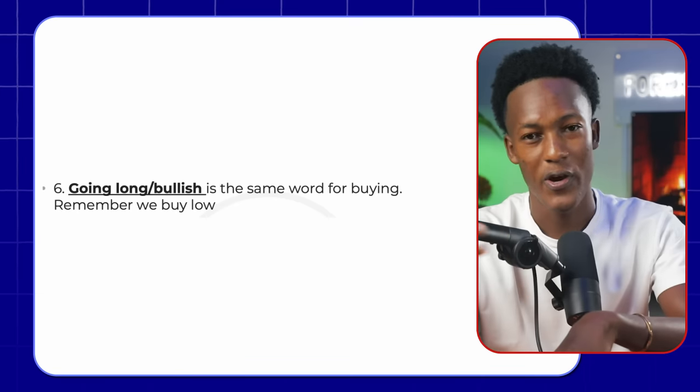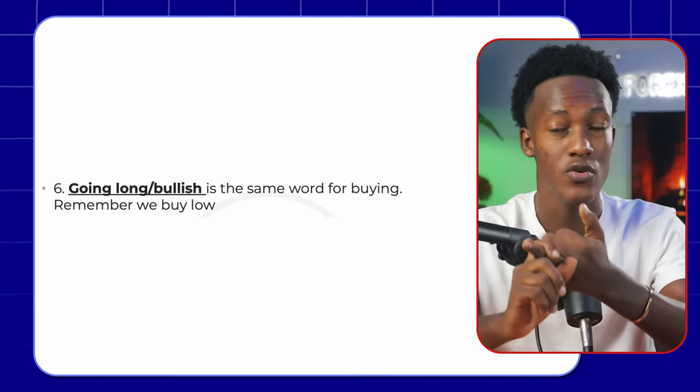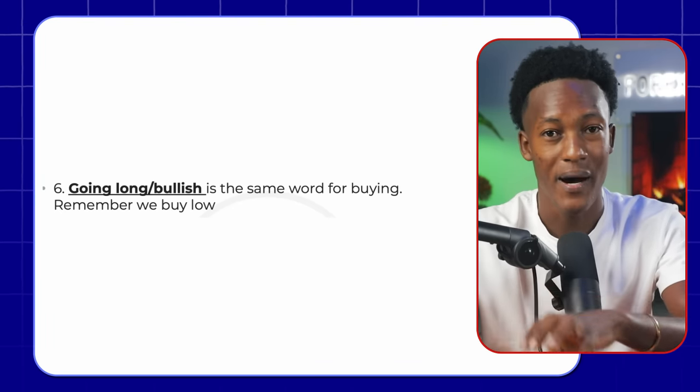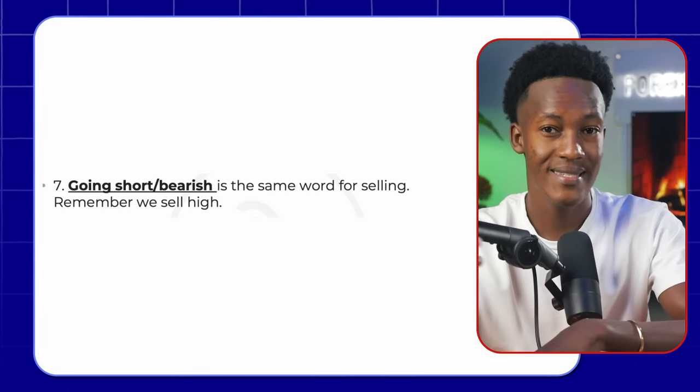Going long, also called bullish, means you are buying. Going short, also called bearish or selling, means you are selling. We buy when the price is going to the upside — you can say we buy low and sell high. Once you buy an asset, more often you buy it at a small amount and then wait for the price to go up and then sell.